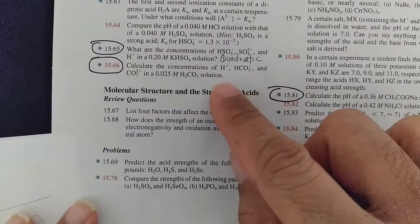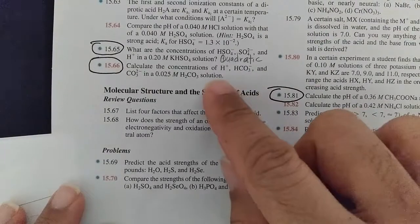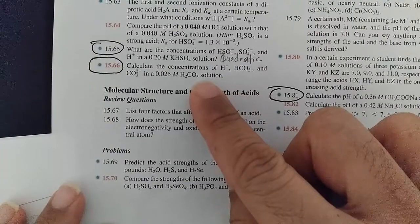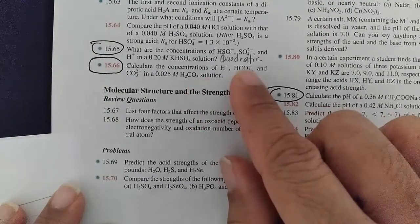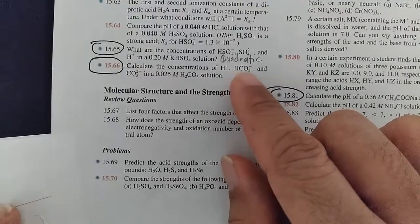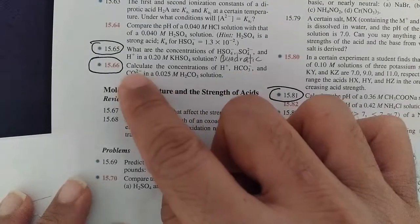In this video we have to figure out the concentration of all the species from the dissociation of carbonic acid. Carbonic acid will dissociate one proton to give you bicarbonate. This proton can also potentially dissociate to give you carbonate.